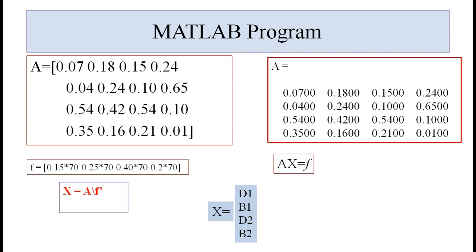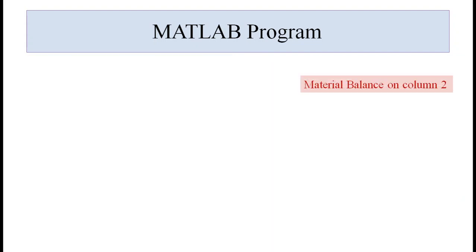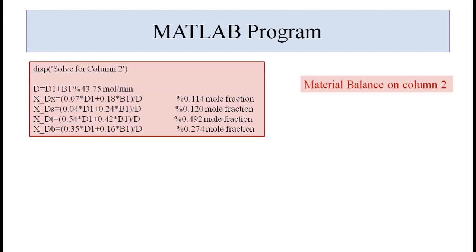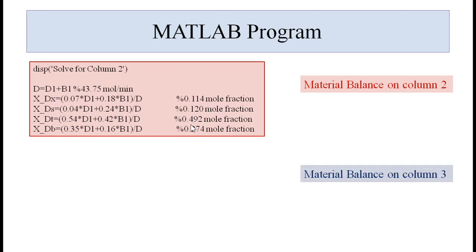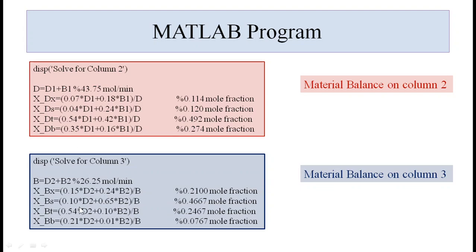To assign the values: D1=x(1), B1=x(2), D2=x(3), and B2=x(4) in the MATLAB program. Then we move to the material balance on column 2 and write those equations in MATLAB. Similarly, we write the material balance equations for column 3 in the program. After writing all equations, we save the program and run it.